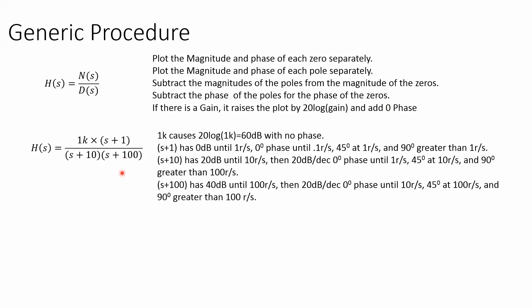In this example we have one zero at -1, one pole at -10, and two poles at -100. So we're going to plot the magnitude and phase of 1K, (s+1), (s+10), and (s+100) separately, and then add it all together.